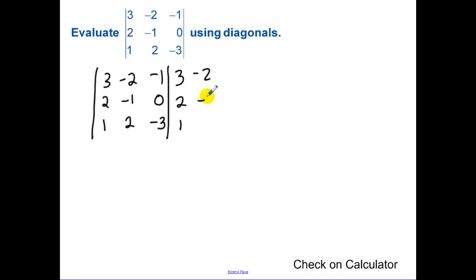Write negative 2, negative 1, and 2. Now find the product of the main diagonal, which is positive 9, and continue on and add all these values together.